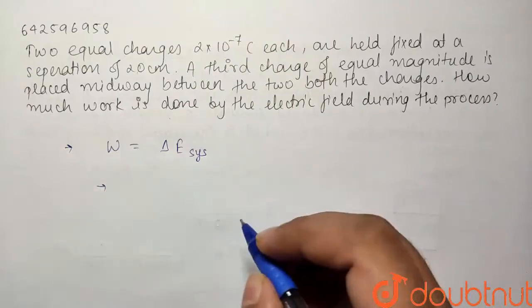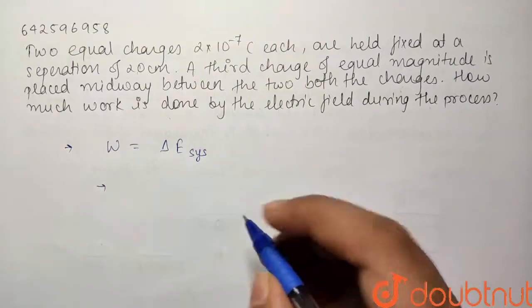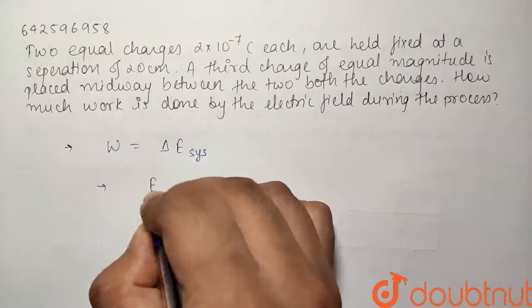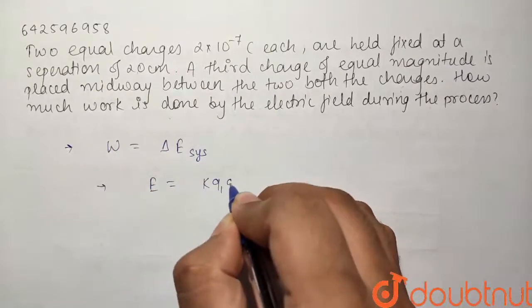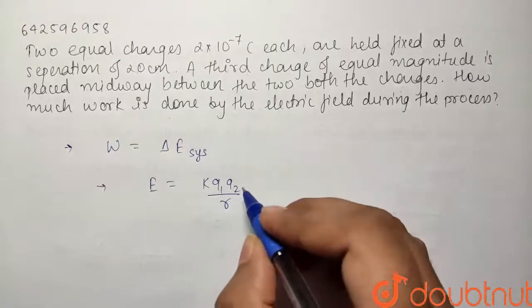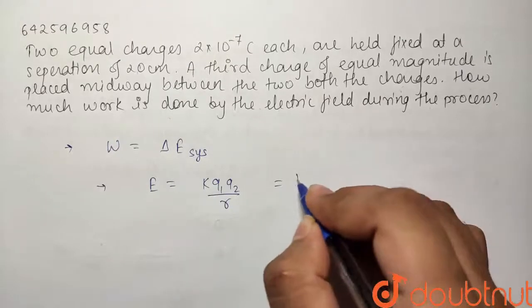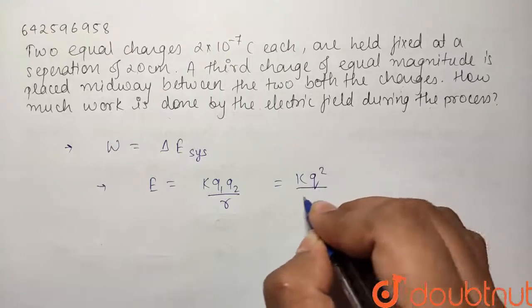So we know that in the case of electrostatics, the energy of interaction between two charges is given by the formula KQ₁Q₂/R. And in this case all the charges are equal, so basically we can write it as KQ²/R.